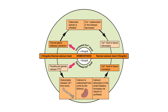Likewise, a decrease in blood calcium will cause the opposite effect. Parathyroid hormone will increase osteoclastic activity and decrease osteoblastic activity, causing an increase in blood calcium. The kidneys will promote the reabsorption of calcium as well.